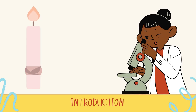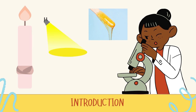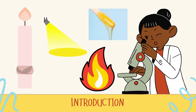A candle is an ignitable wick embedded in wax. Usually the wax used is paraffin wax or another flammable solid substance such as tallow. Its purpose is to provide light — the main source of light before electricity and the light bulb was invented — and it is still used until now. A candle can also provide heat, which is one of its purposes.